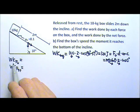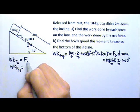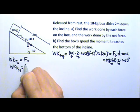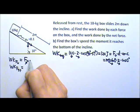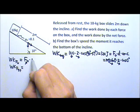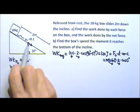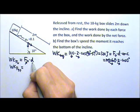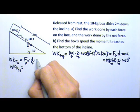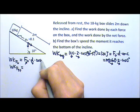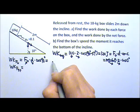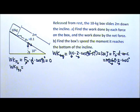For the work done by the normal force: the normal force is always perpendicular to the incline, and the displacement is along the incline, so the angle between them is 90 degrees. Cosine 90 degrees is 0, so the work done by the normal force is 0.